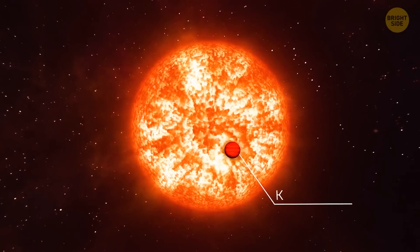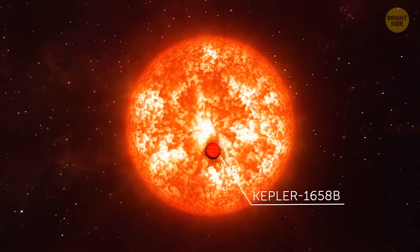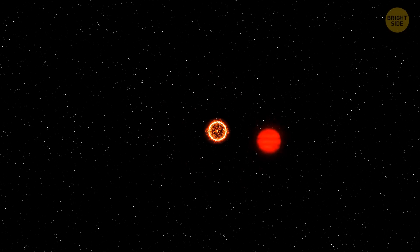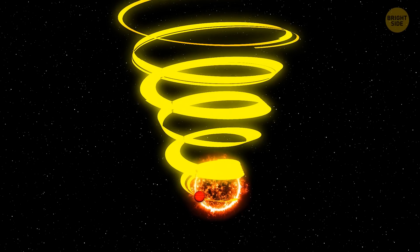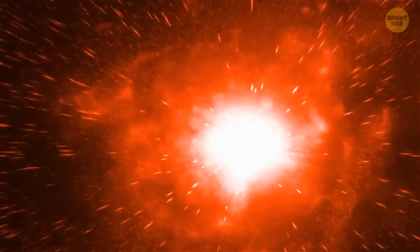Every year, Kepler-1658b needs 131 milliseconds less to complete a lap around its star. If this tendency continues, the planet is bound to collide with its star in 2.5 million years.